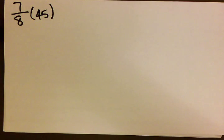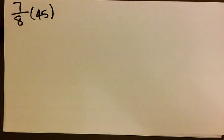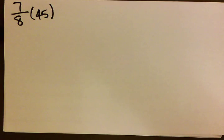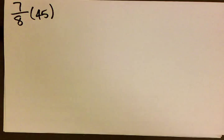The question is 7 over 8, multiplied by 45. The instructions tell us that we want to estimate and find the actual product expressed as a mixed number in simplest form.